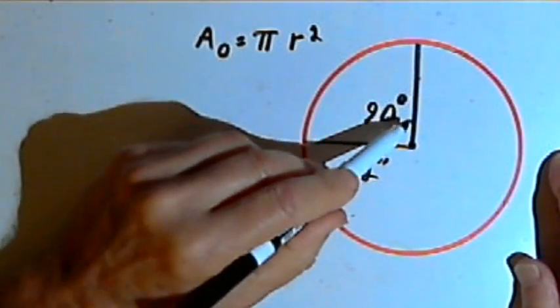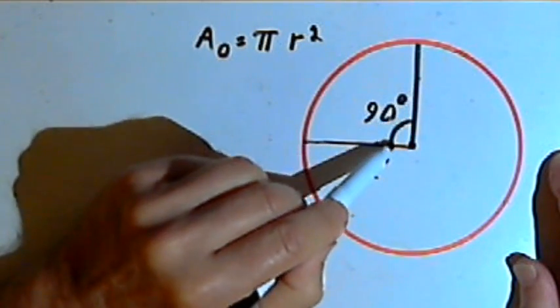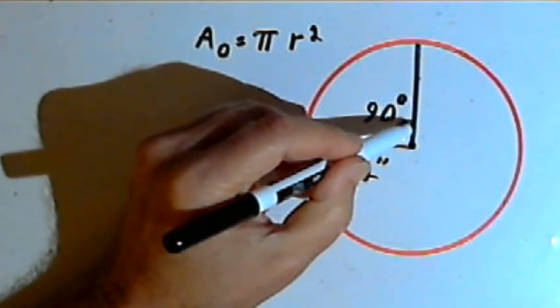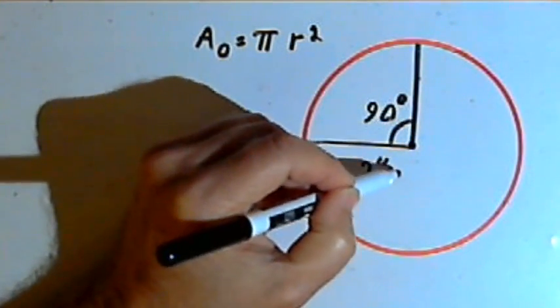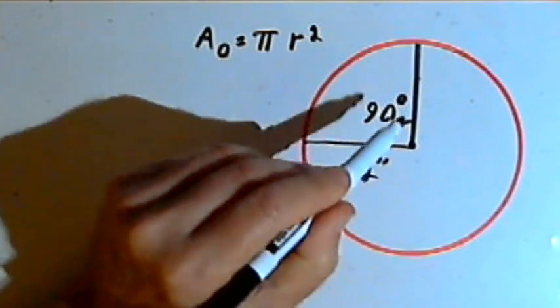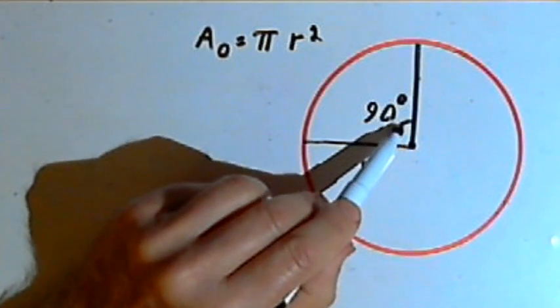But I don't want the area for the entire circle. I just want the area for this portion, this sector, of the circle. Now, the next thing we have to remember is that if I went all the way around the circle, I would go 360 degrees. But this sector doesn't let me go all the way around. I only go 90 degrees around.